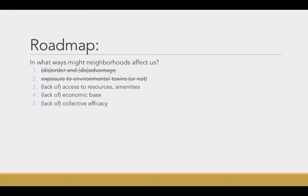Those three ways are: lack of or exposure to access to resources and amenities, an economic base in the neighborhood or a lack thereof, and collective efficacy in the neighborhood or a lack thereof. Just a side note — this is not an exhaustive list. There are lots of ways that neighborhoods affect us. This list puts some of the things that you've read into categories to help you more easily organize them in your brain.